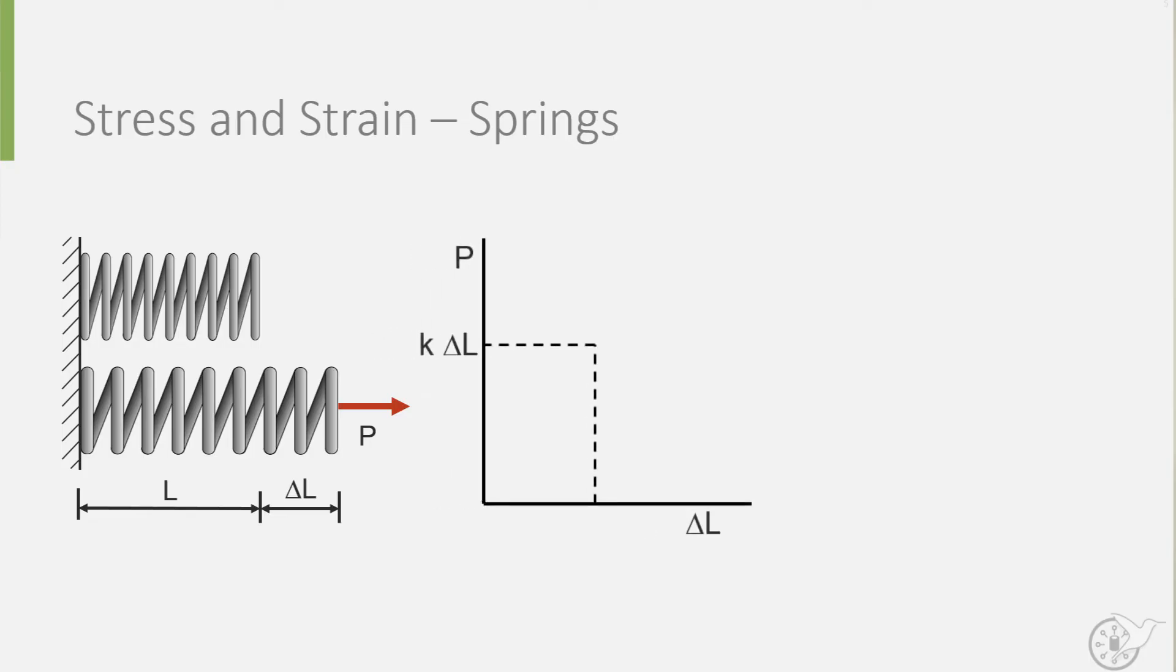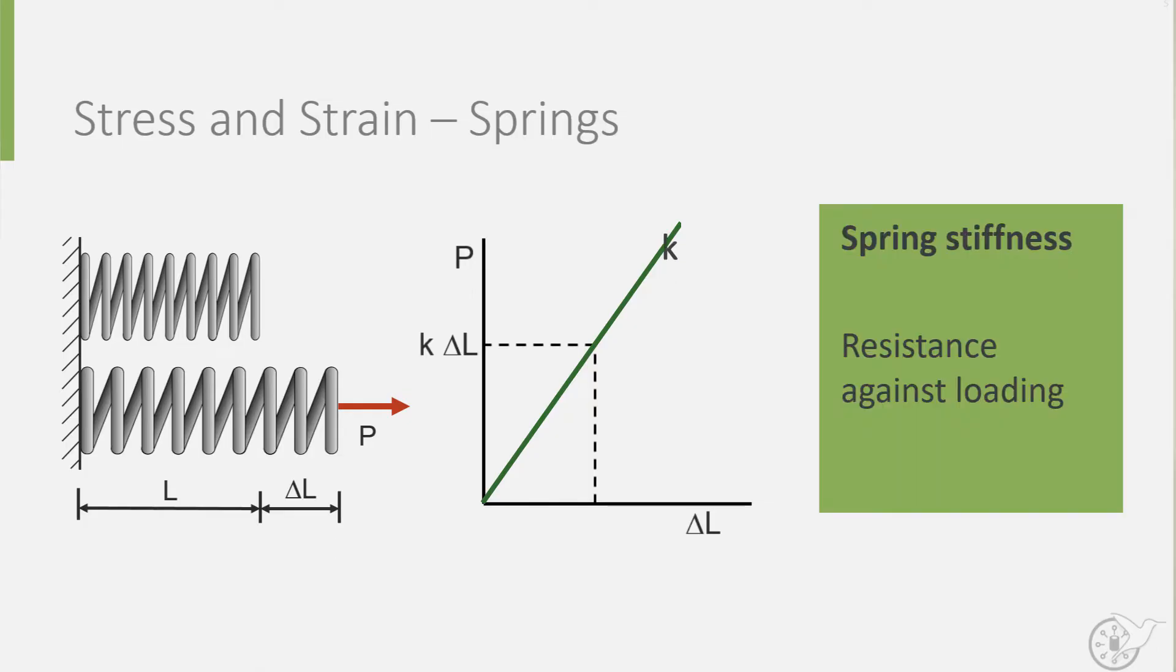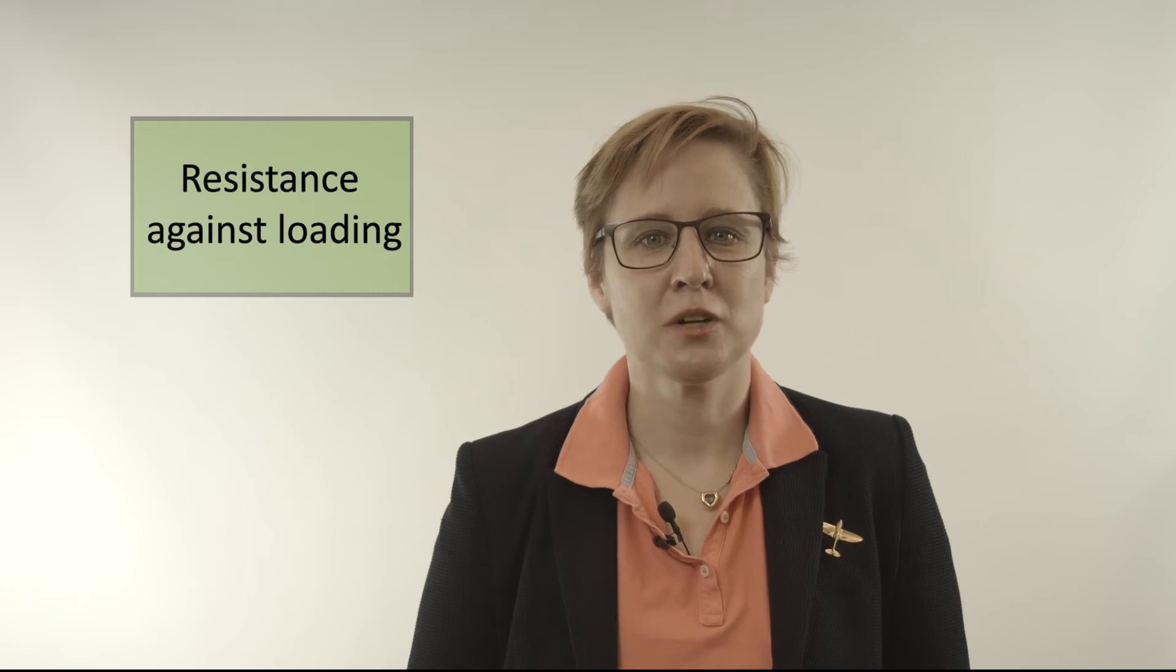We know from physics that for a spring, a linear relationship exists between the load applied and the extension of the spring. We also know that the slope of such a diagram is linear and is equal to the spring stiffness k. Looking at it differently, one could view the spring stiffness as the resistance of the spring against loading.